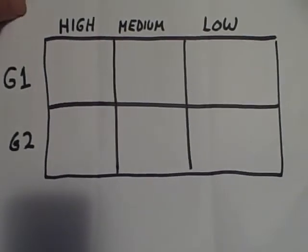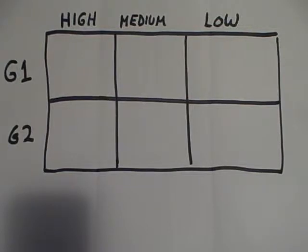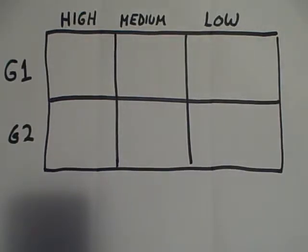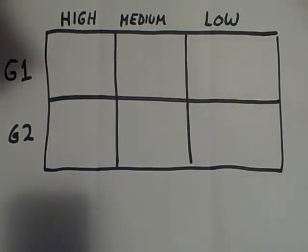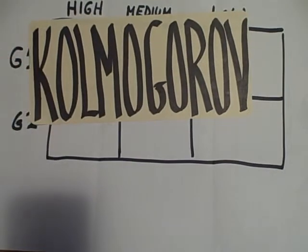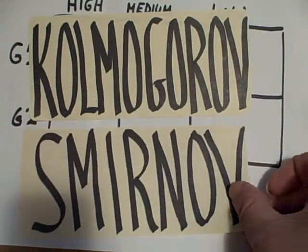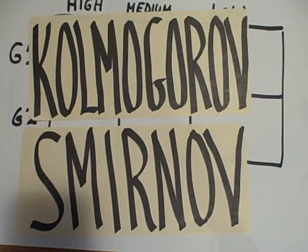Suppose we have two groups and we are comparing those two groups on some other ordinal scale — high, medium, and low. We could use a chi-square there, but there is a better statistical procedure that does not have the minimum five-sample-per-cell assumption. That test is known as the Kolmogorov-Smirnov, a very robust and appropriate test to use.